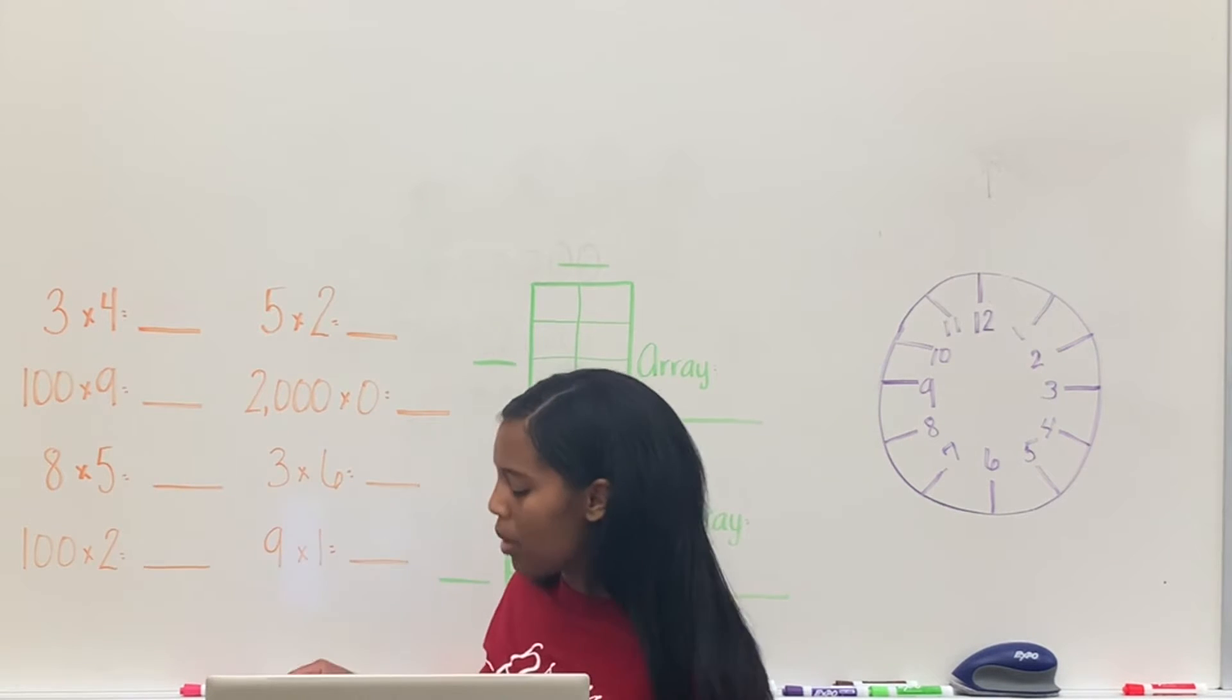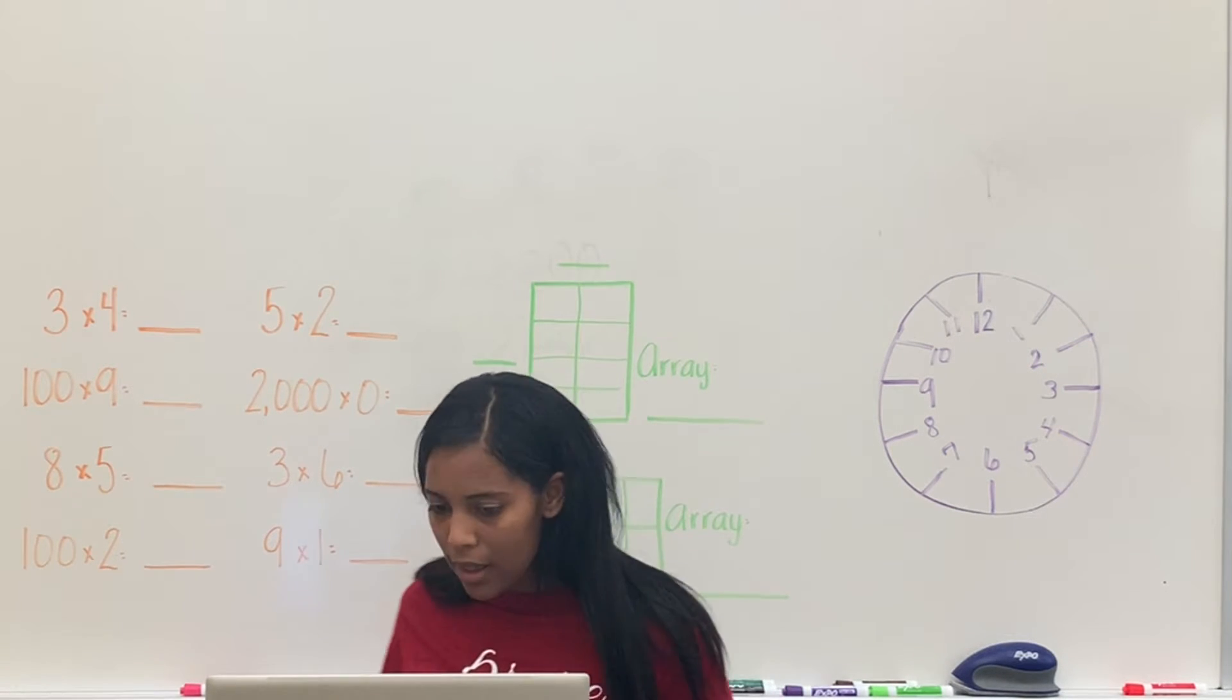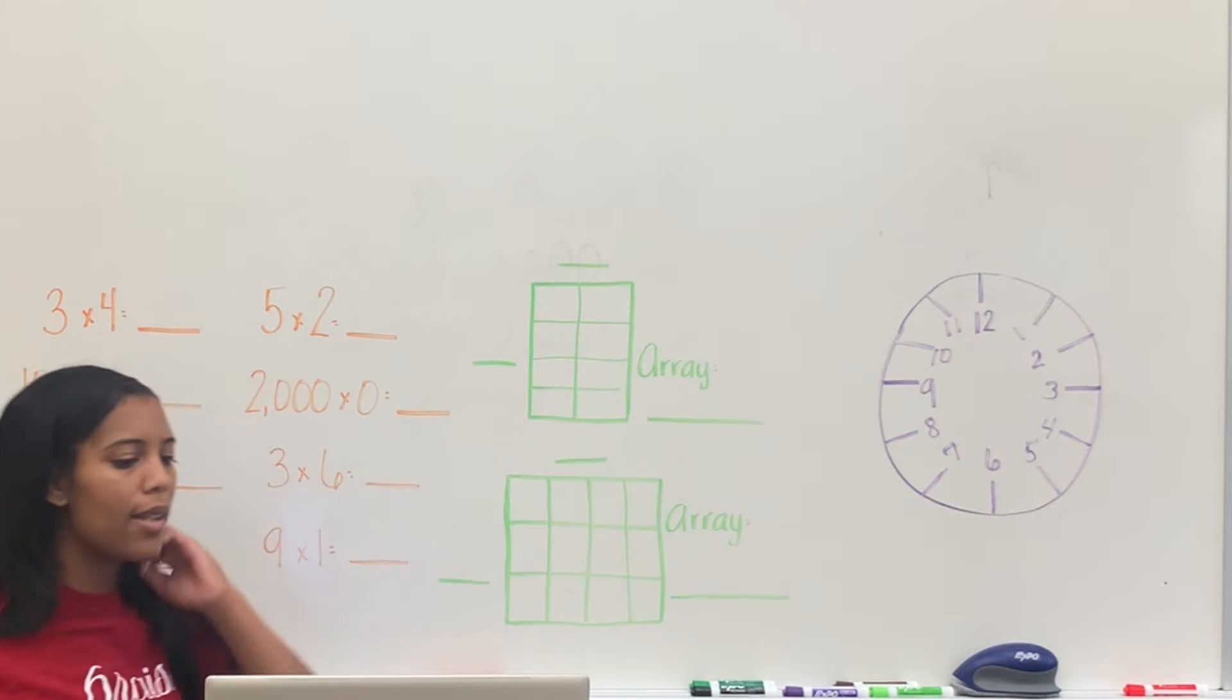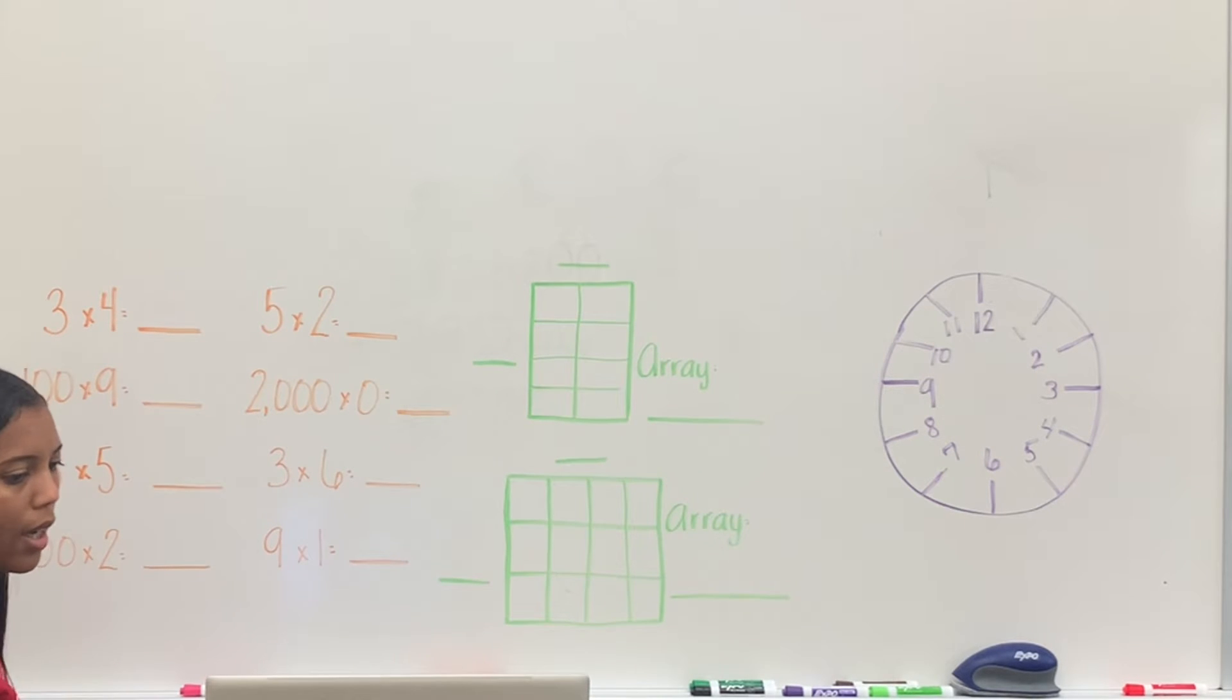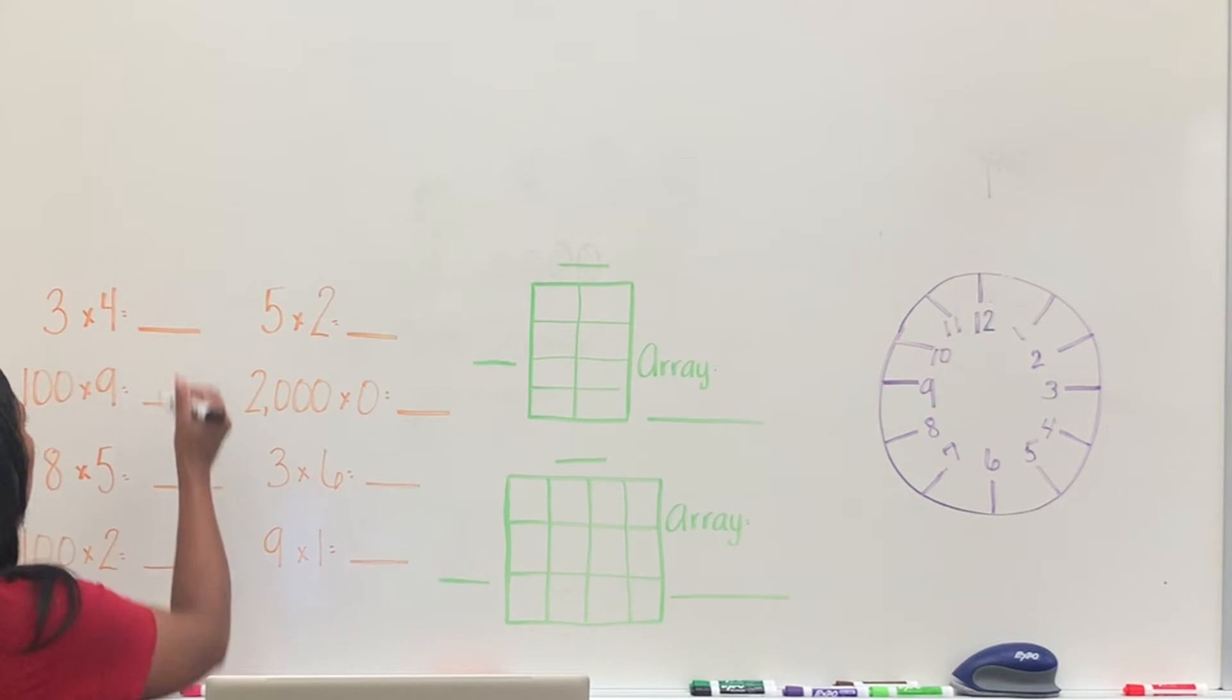All right, so let's do some multiplication facts. I have 3 times 4. Anybody has the answer? 3 times 4. Cullen, what do you have? 12. 12.